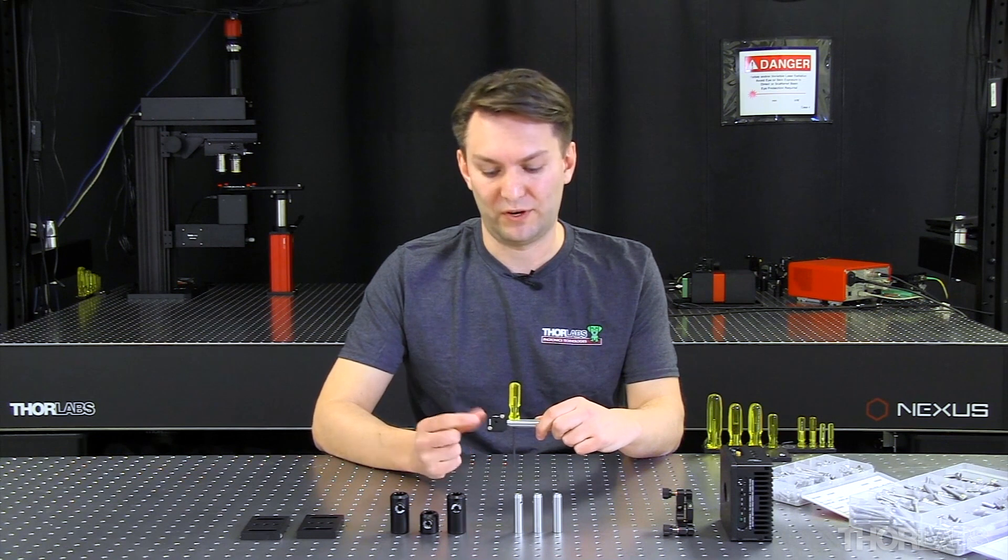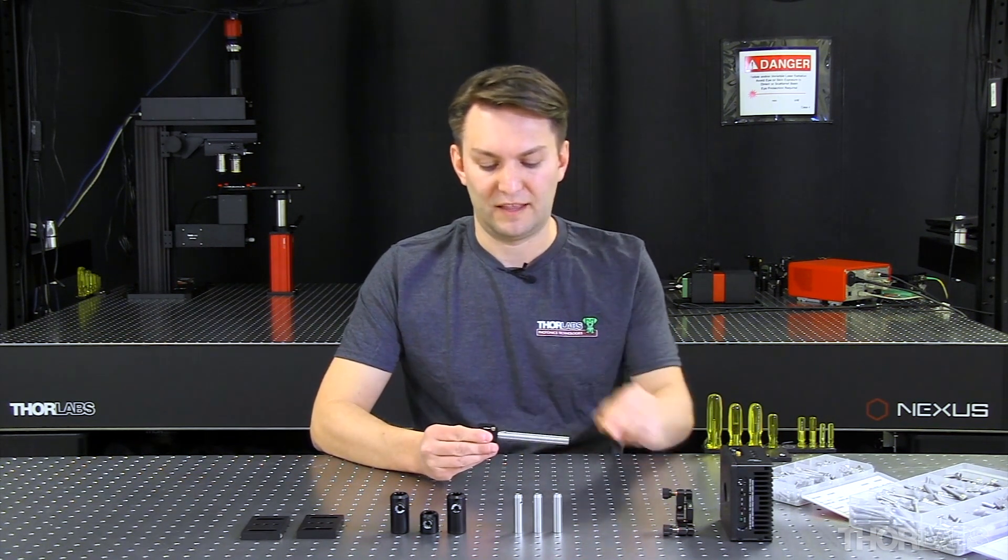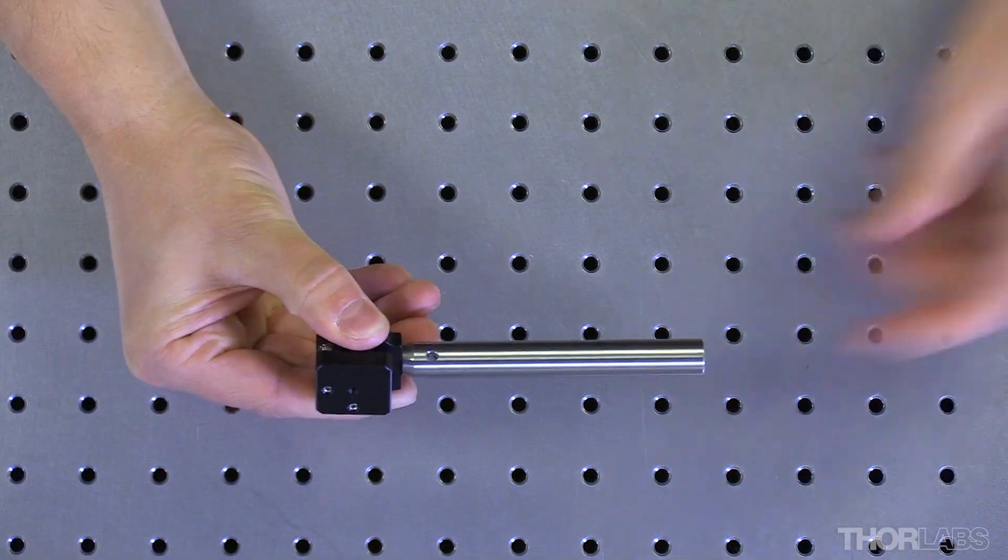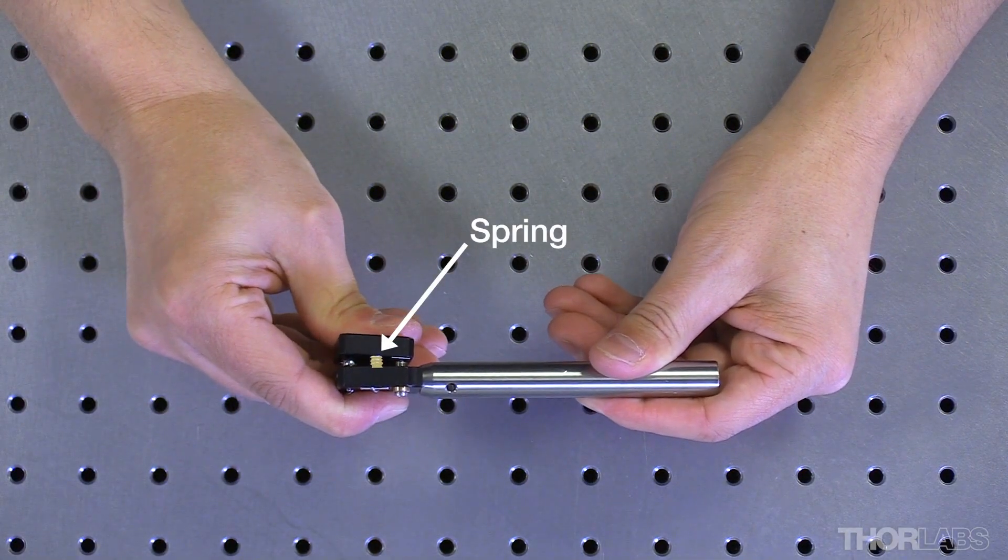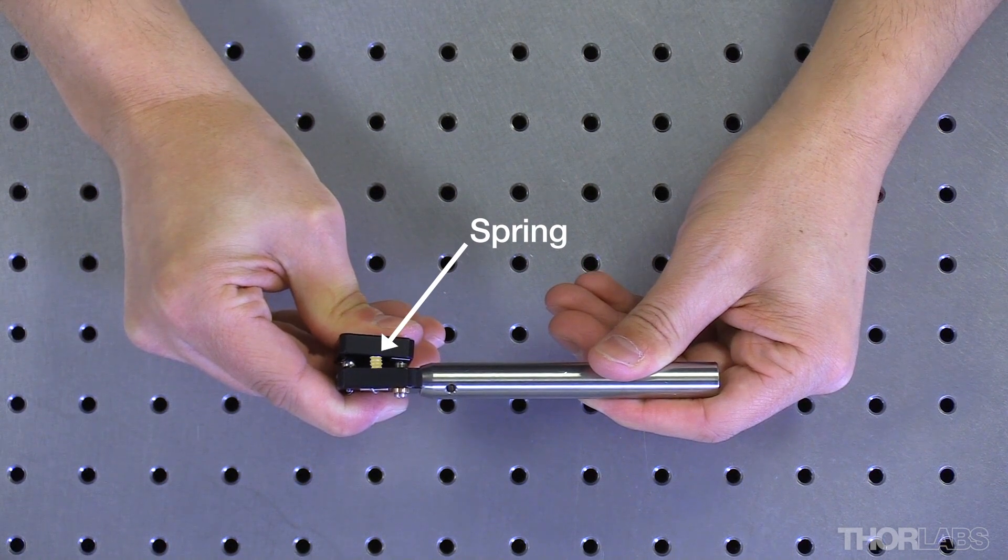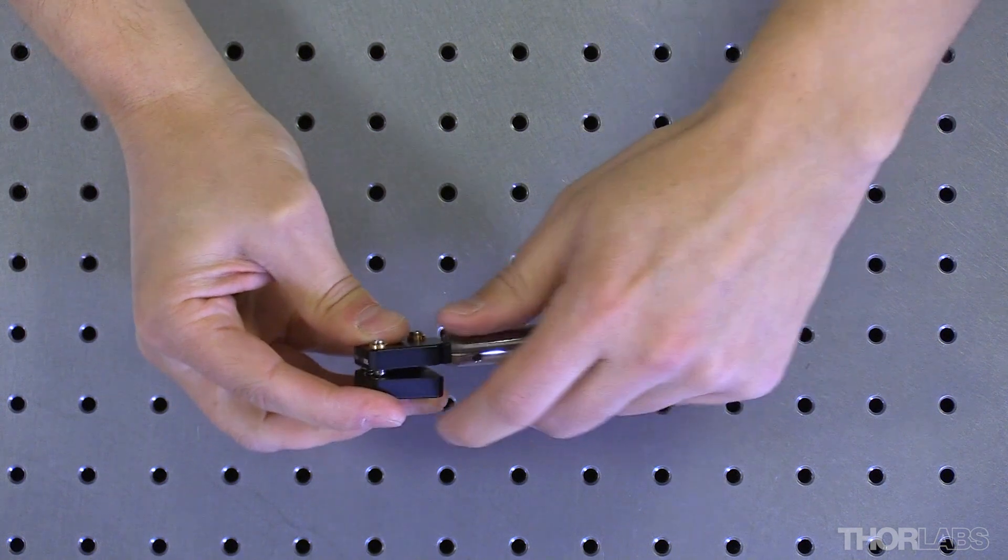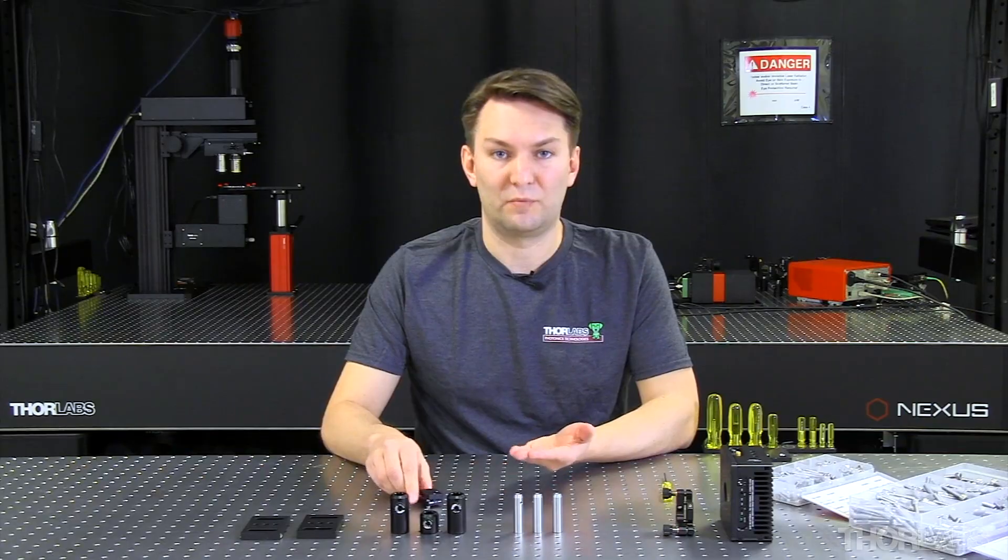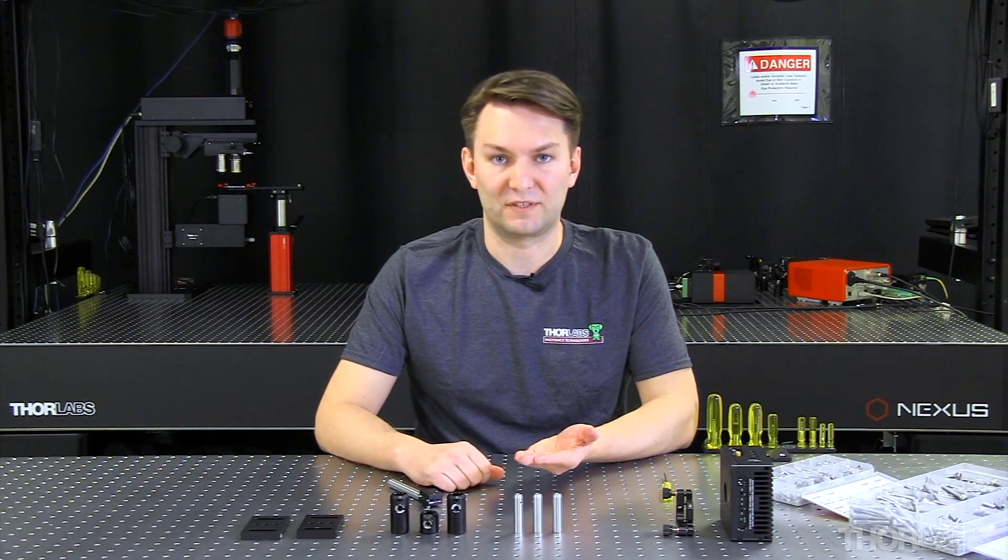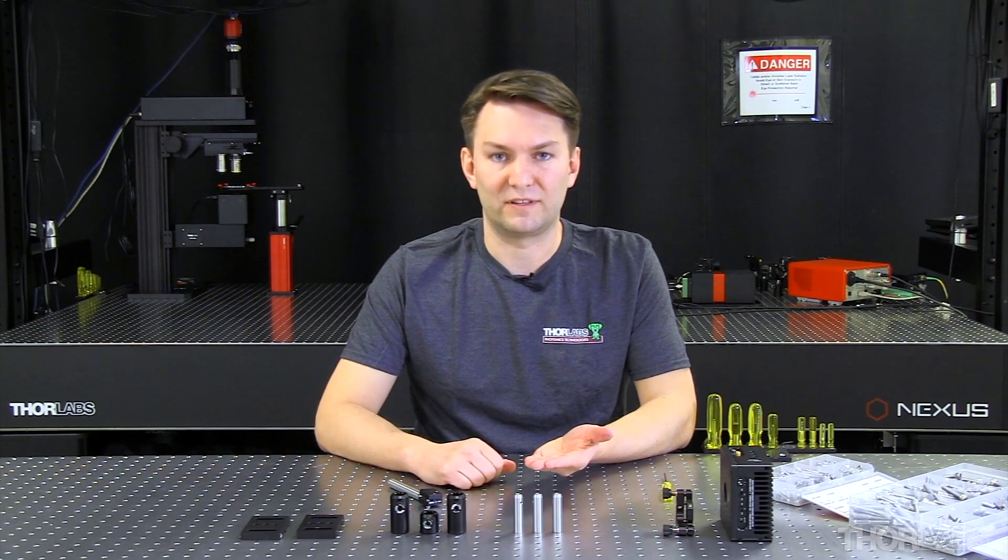Now you want to be a little careful when you grab your optomechanics. If you happen to have a mount that has a spring in it and you extend that spring, you can overextend it and damage that spring. Alternatively, it's possible that if you pull the front plate away from that back plate that you can lose the ball that the front plate pivots about. And this ball is very small and can easily fall onto the table.